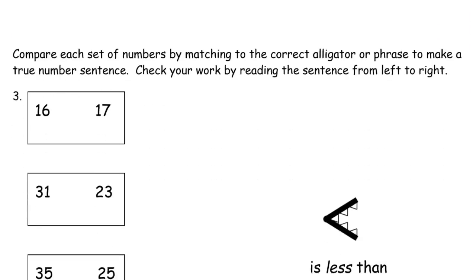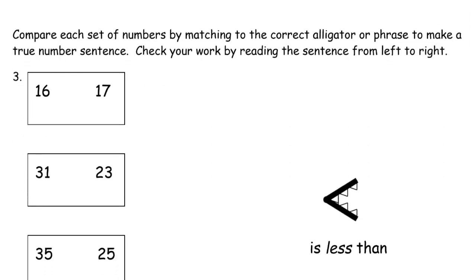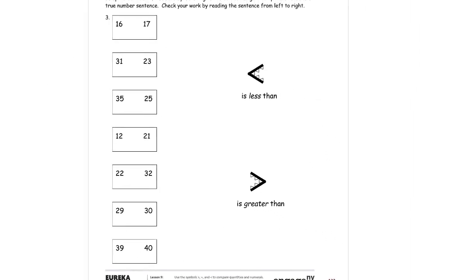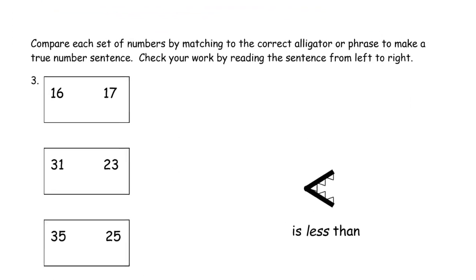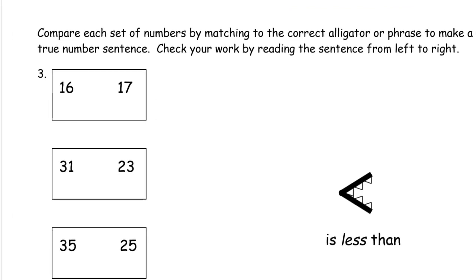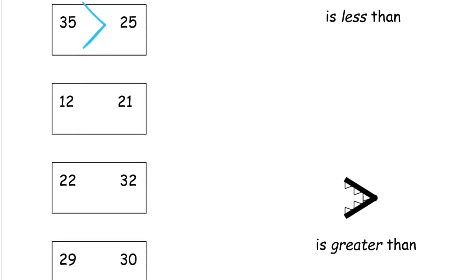So all right let's check them all compare each set of numbers by matching the correct alligator or phrase to make a true number sentence check your work by reading the sentence from left to right just like I did for the first page. So for this whole thing we're just going to match them up but it's going to be easier just to look at each one and draw the symbol and then go back and draw the matchup lines. So let's see alligator eats the bigger number eats the bigger number eats the bigger number. You can draw the teeth in there I'm just skipping the teeth but it's fun to draw them so if you have time to do it it's fun you like doing it go ahead draw the teeth.